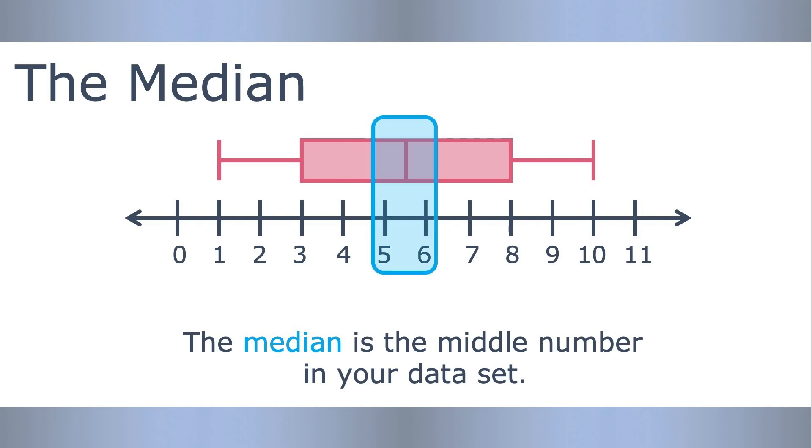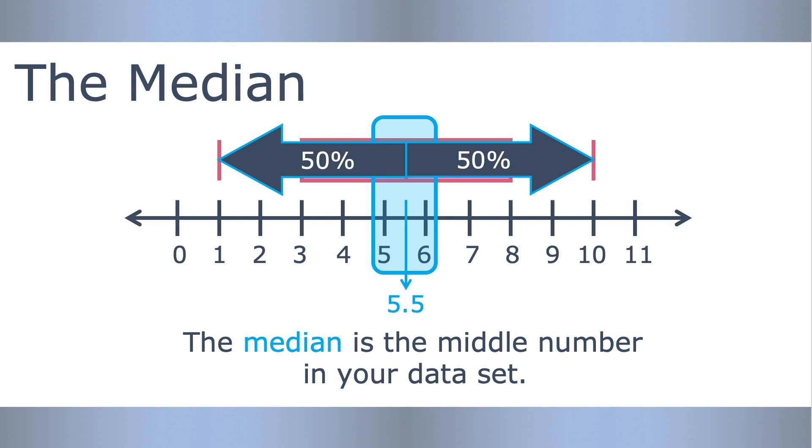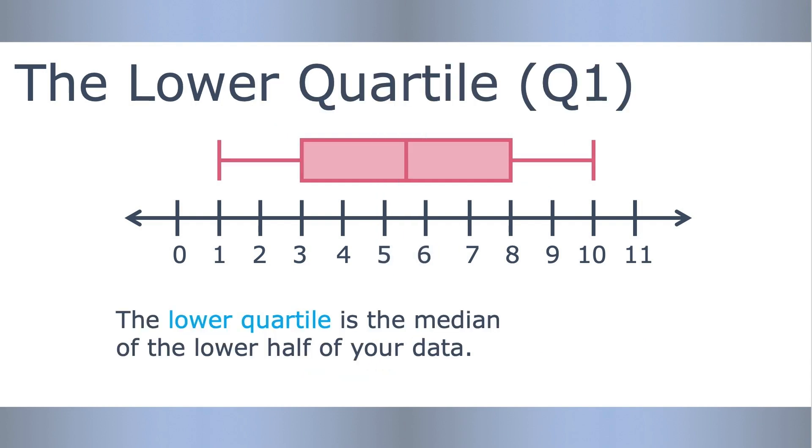The median is the middle number in your data set. In this example, the median is 5.5. One-half or 50% of the values in your data set are above the median and 50% are below. The lower quartile, often called Q1, is the median of the lower half of your data. That means one quarter or 25% of the data is below this value and 75% of the data is above this value.